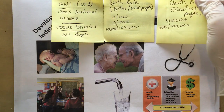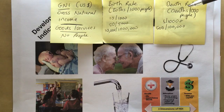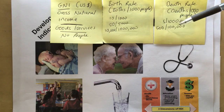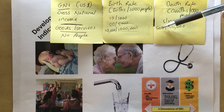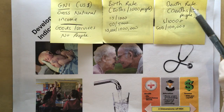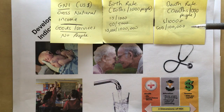Next is the death rate — exactly the same measure: the number of deaths that take place for every thousand people in a country. To make it comparable between different countries, it's expressed as deaths per thousand people. In the UK there are about 9 deaths per thousand people, whereas in countries like Nigeria it's about 13 deaths per thousand people.